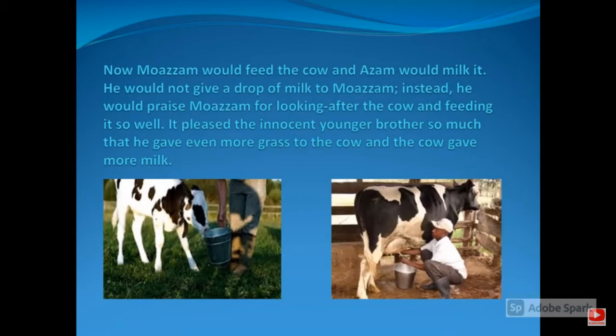Moazam would feed the cow, but Assam would milk it and not give a single drop of milk to Moazam. Instead, he would praise Moazam for looking after the cow and feeding it so well. This pleased Moazam so much that he gave even more grass to the cow, and the cow gave more milk.